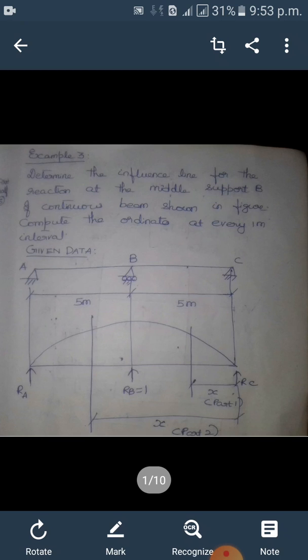Now for this middle support, if you draw the ILD it will have only positive values with A and C at 0 and at B equal to 1. If you know that ILD diagram, you can find out whether you're proceeding right or wrong when you get the answers.